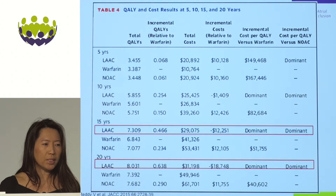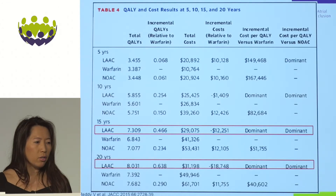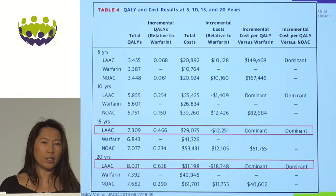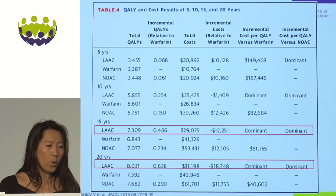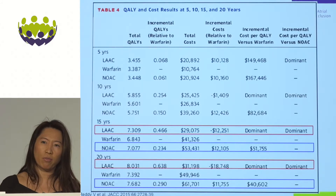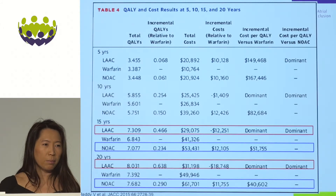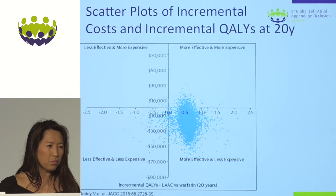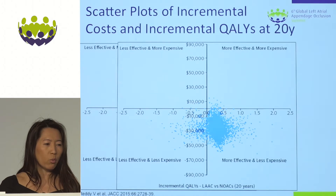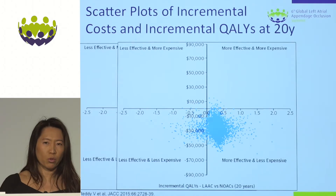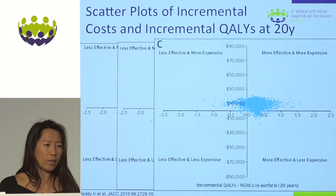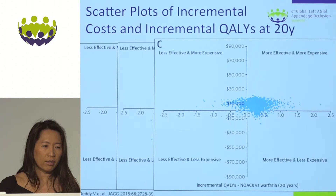Looking at 15 and 20 years, LA closure remains dominant compared to both warfarin and NOAC. For NOAC itself, it took about 15 years before it became cost-effective compared to warfarin, and it never became dominant compared to warfarin. On the scatter plot, Watchman versus warfarin was in the southeast corner — more effective and less expensive. Likewise comparing to NOAC it was in the southeast corner. NOAC therapy, by contrast, was in the northeast corner — more effective but also more expensive — and never dominated warfarin.